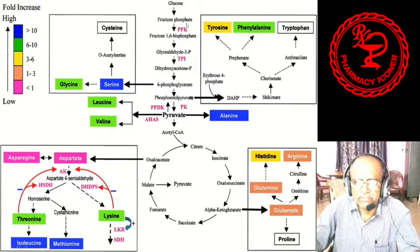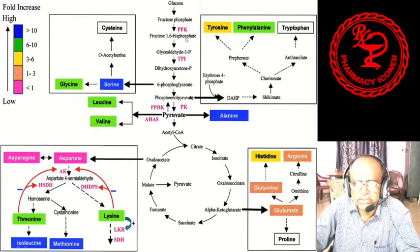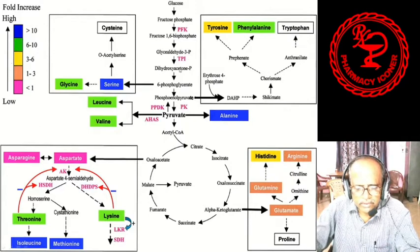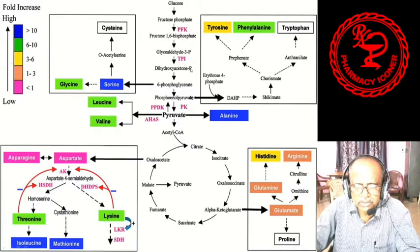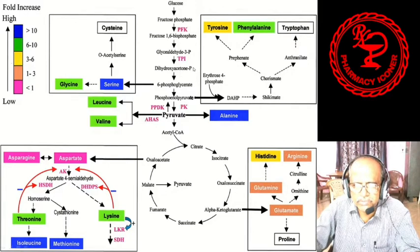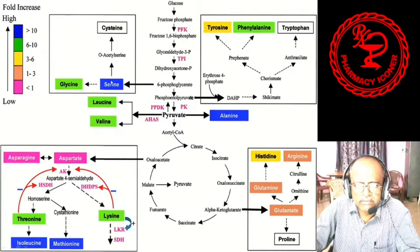With the help of the enzyme phosphofructokinase (PFK), fructose-1,6-diphosphate (or bisphosphate) is formed. From fructose-1,6-bisphosphate, glyceraldehyde-3-phosphate is formed. With the help of the enzyme TPI — that is triose phosphate isomerase — which catalyzes the reversible interconversion of triose phosphates, dihydroxyacetone phosphate is formed.